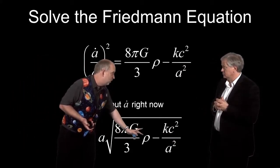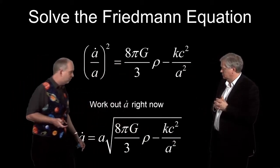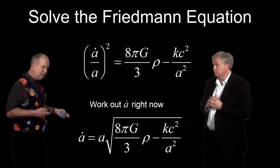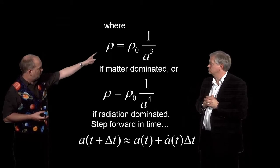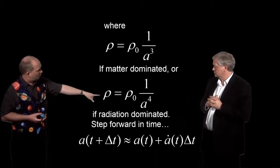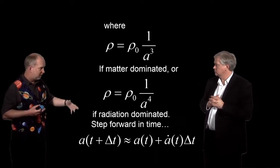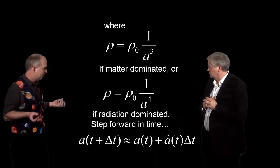Yes. I mean, this density is going to go as 1 over A cubed or A to the fourth. And there's a 1 over A squared over there. So this makes it rather complicated to solve.